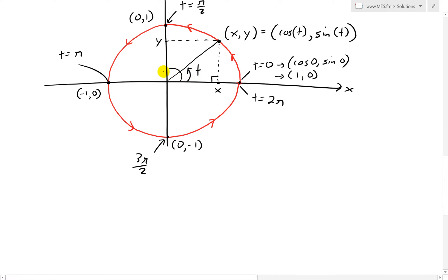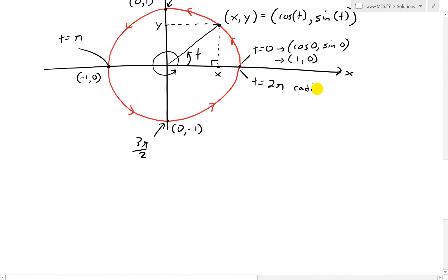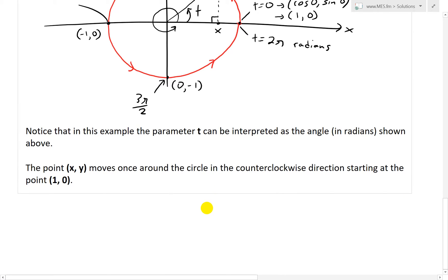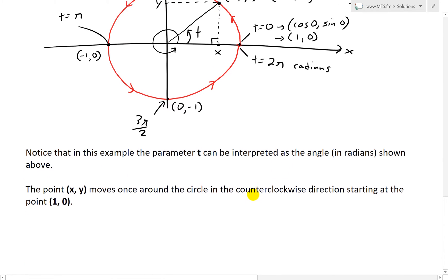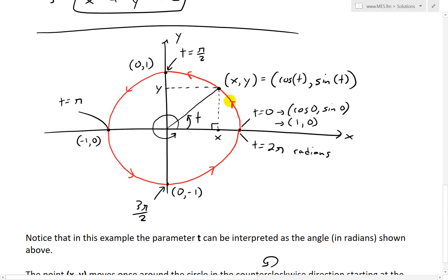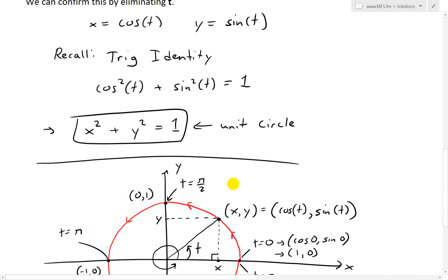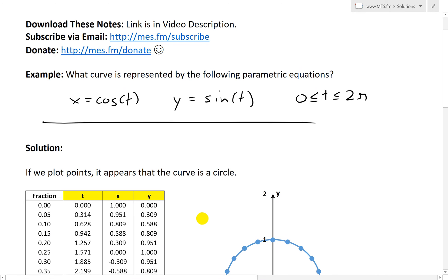And basically this t value, what ends up happening is it just goes around like that all the way around for a full 360 degrees or 2 pi radians. Again, we're just assuming it's radians like that. And here, just to reiterate, basically notice that in this example, the parameter t can be interpreted as the angle in radians shown above. And this is different from my earlier videos where I went over how the parameter t is usually used for time. But in this case, it can be used as angle. And also the point x, y moves around the circle in the counterclockwise direction starting at the point 1, 0. So we start off right here and we move counterclockwise. So that's what these parametric equations are basically defining. It's a circle. So this is another way of writing a circle by writing it in a parametric equation form, which is pretty cool.